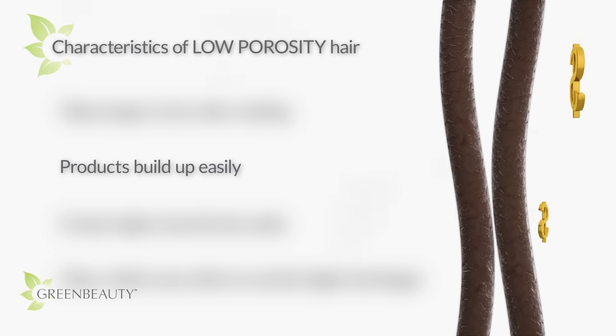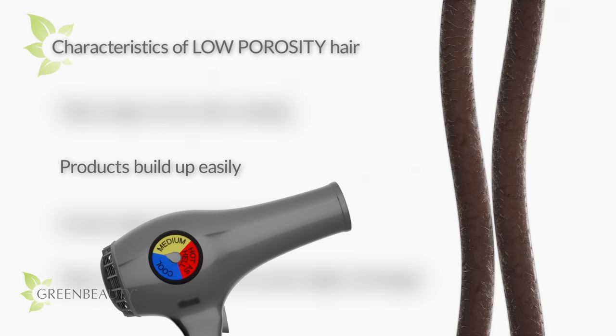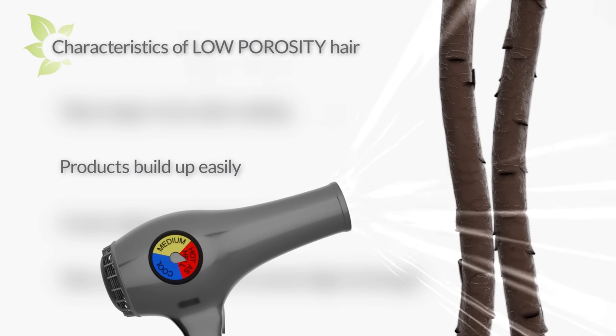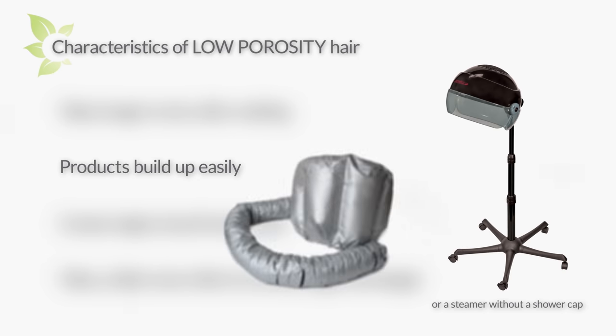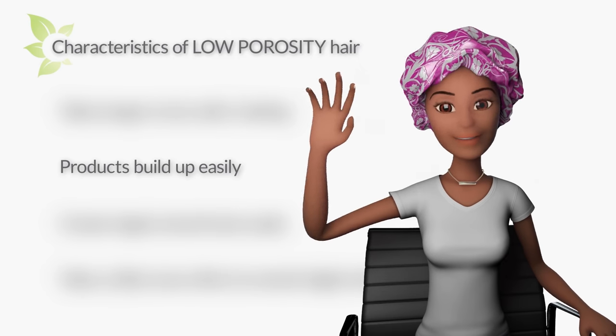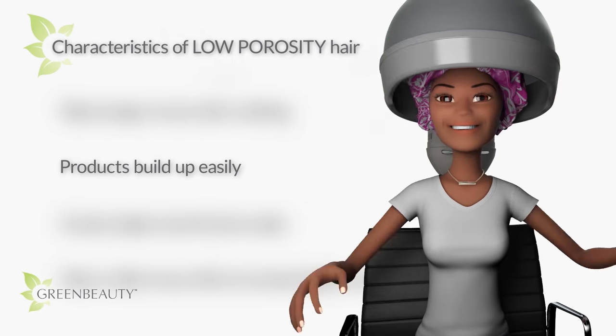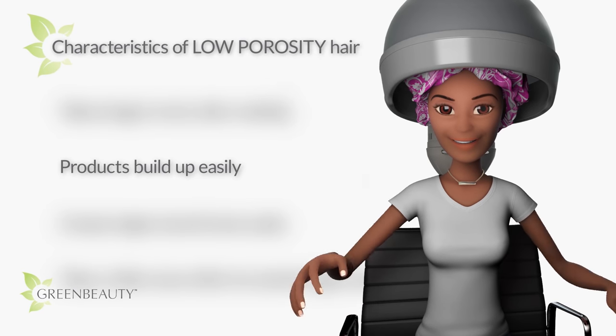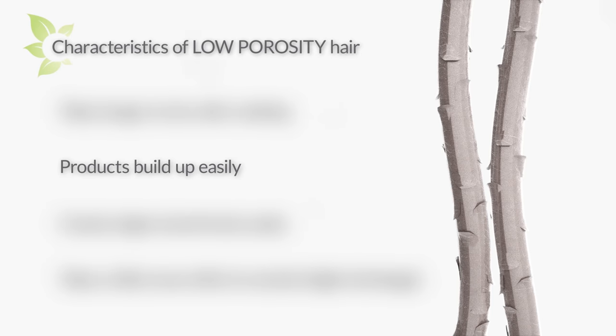None of us want to spend money on products just for them to sit on our hair and dry up, so here's a solution: use heat. Everyone is scared of heat because of the potential for heat damage, but if used correctly heat can be very beneficial. In the case of avoiding unhealthy product buildup, the use of indirect heat helps relax your tight cuticles enough for products to penetrate. Invest in a hooded dryer or a bonnet dryer, and every time you condition your hair wear a shower cap and sit under the dryer for about 30 minutes.